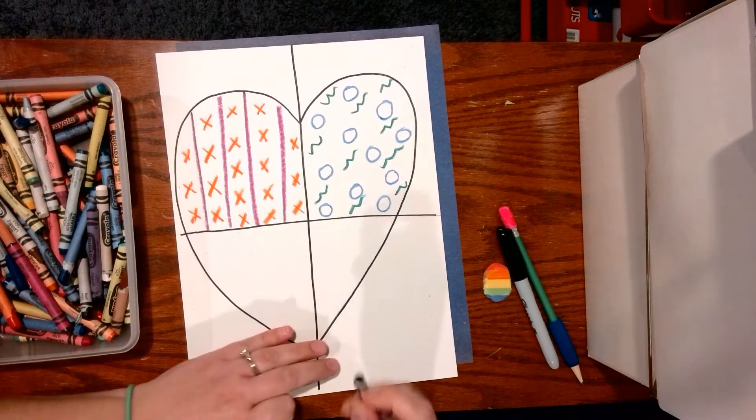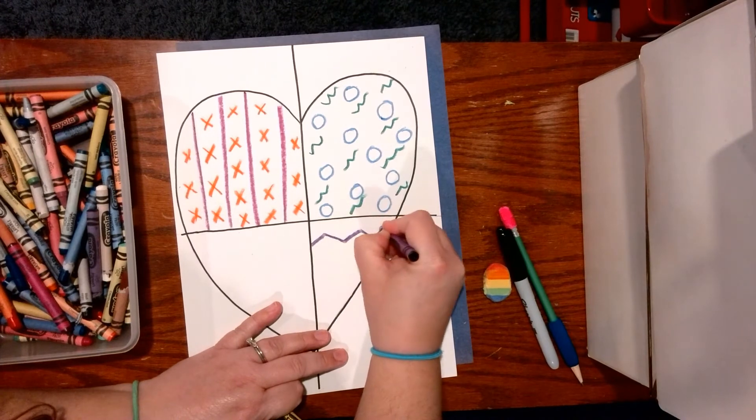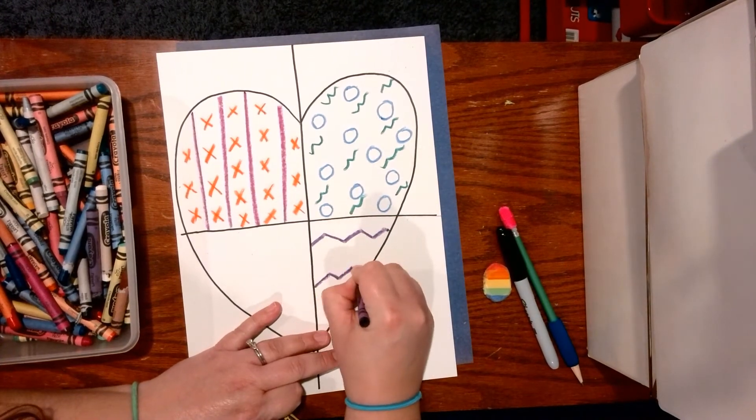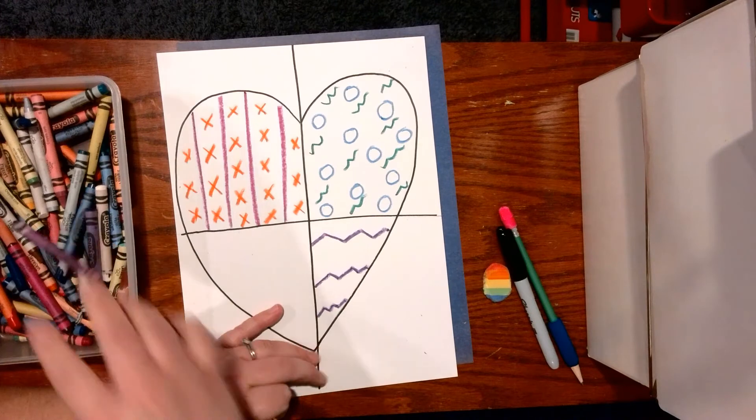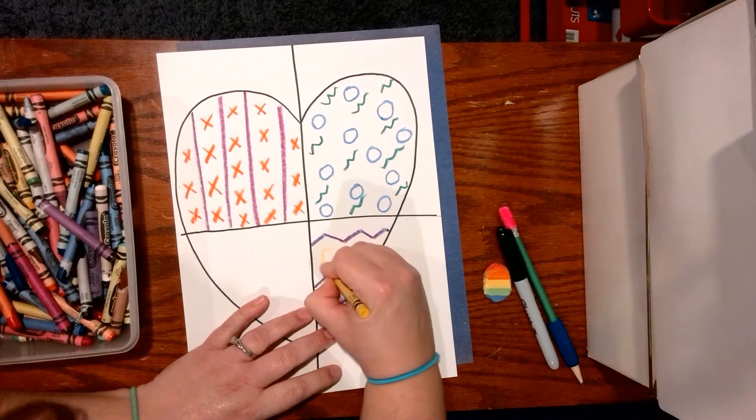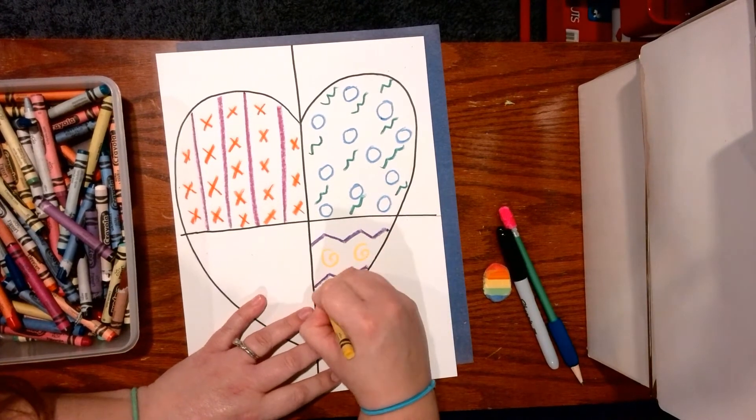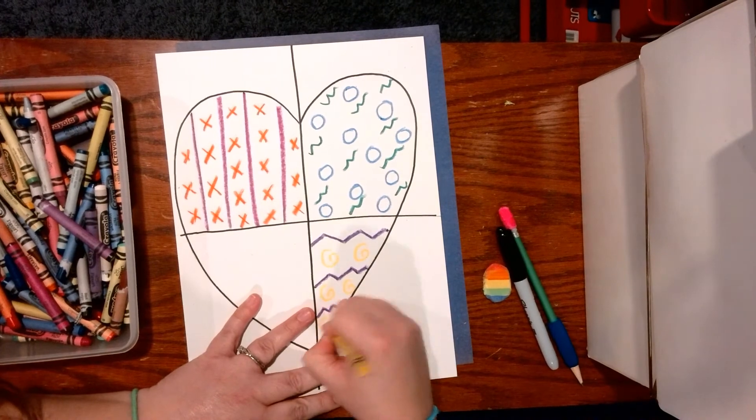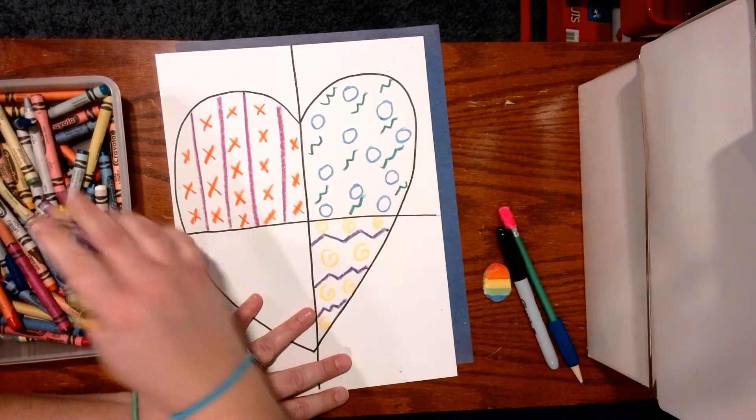Do something different here. Again, it can be big lines, little lines. Do some spirals. Okay.